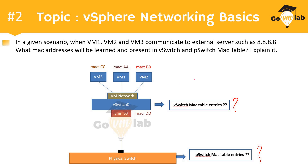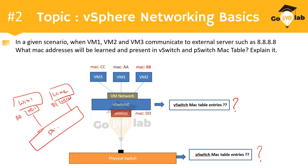Coming from a physical networking world, consider this basic scenario: you have Windows Server 1 with network adapter MAC address AA and Windows Server 2 with MAC address BB, both connected to a physical switch. If Windows Server 1 wants to talk to Windows Server 2, the physical switch performs MAC learning, and both AA and BB MAC addresses would be present in the physical switch CAM table.